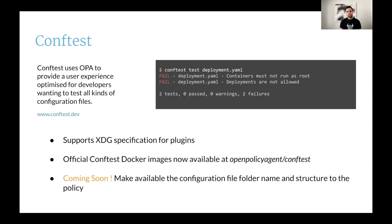ConfTest provides a plugin feature that allows you to extend the CLI without having to change the ConfTest codebase. ConfTest now supports the XTG specification for its plugins. You can find the official Docker images for ConfTest on Docker Hub at openpolicyagent/conftest. Additionally, the ConfTest team is working on a new feature that will let you reference the folder path of configuration files inside your policies — for example, to check that the folder name where a config file is present matches the namespace of the resource.